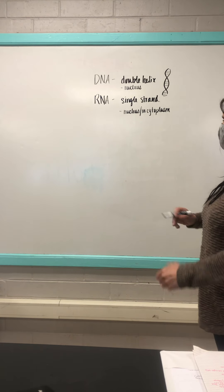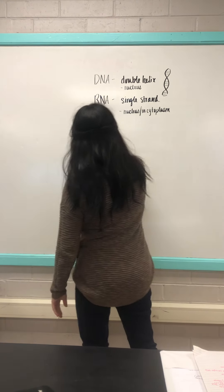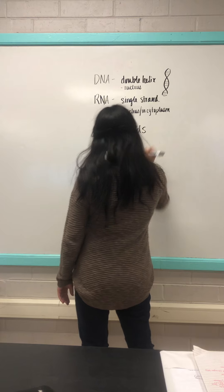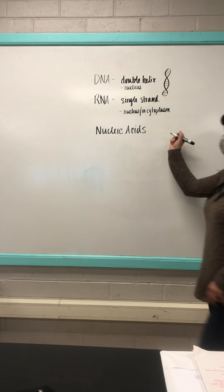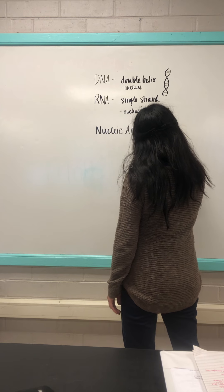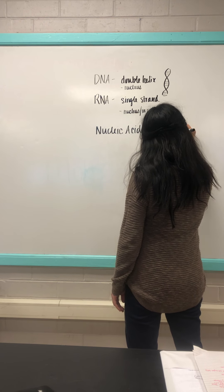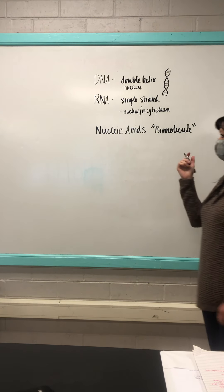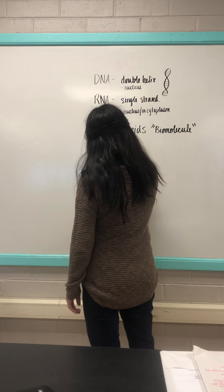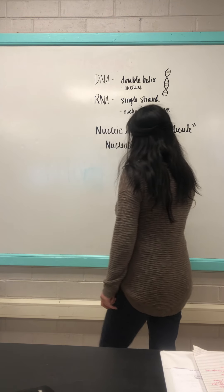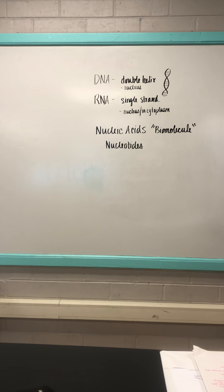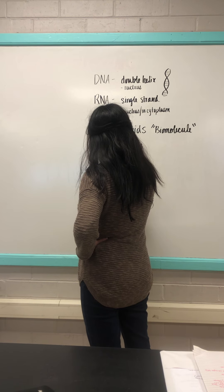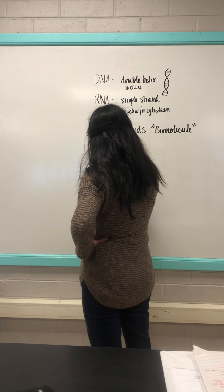Both DNA and RNA are made of nucleic acids — that's the type of biomolecule they are. You'll also hear them referred to as nucleotides. A nucleotide is the little structure that has the sugar and the nitrogen base attached. You'll sometimes hear it referred to as a base pair or nitrogen base.